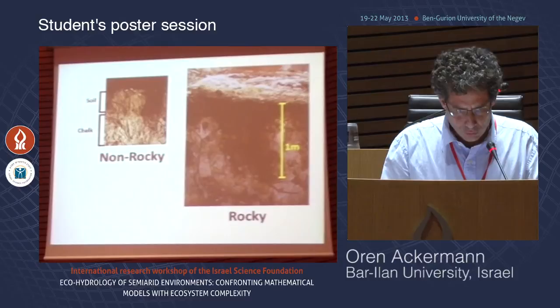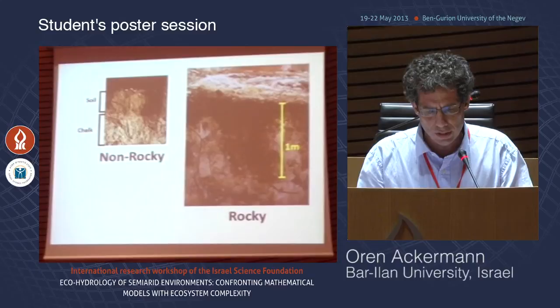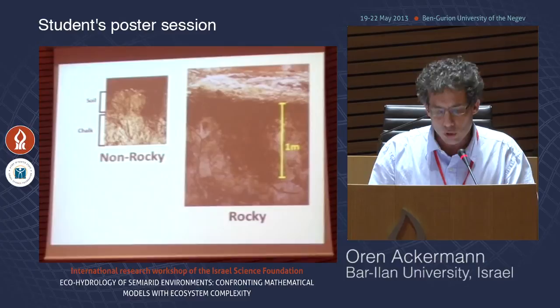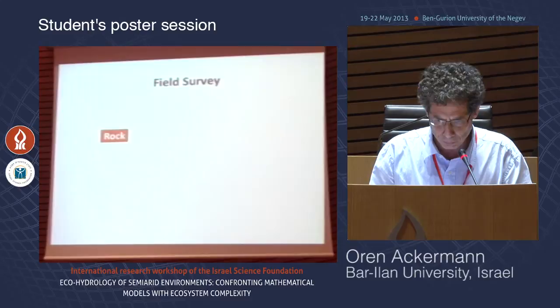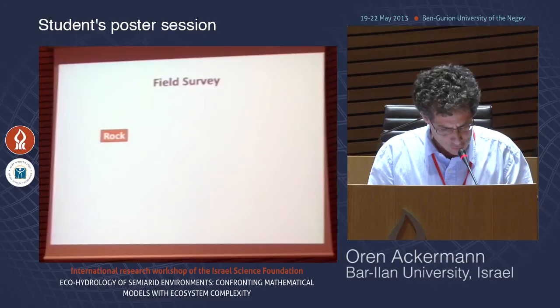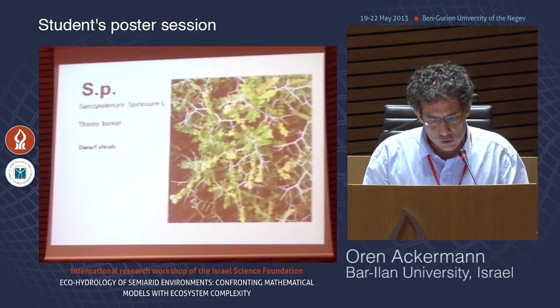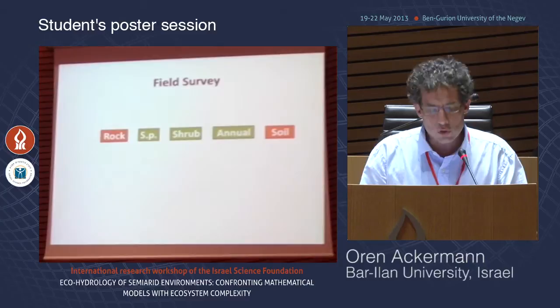The profile of the non-rocky structure is characterized by a thin soil layer of about 30 cm over the chalky bedrock, while the rocky structure is characterized by calcrete rocky outcrop, alternating with soil pockets that reach depths of about one meter. Field survey was conducted, and measurements on five main components were done: rock, SP — which is the acronym of Sarchopotherum spinosum, in English 'thorny burnet' — a common dwarf shrub in the area.